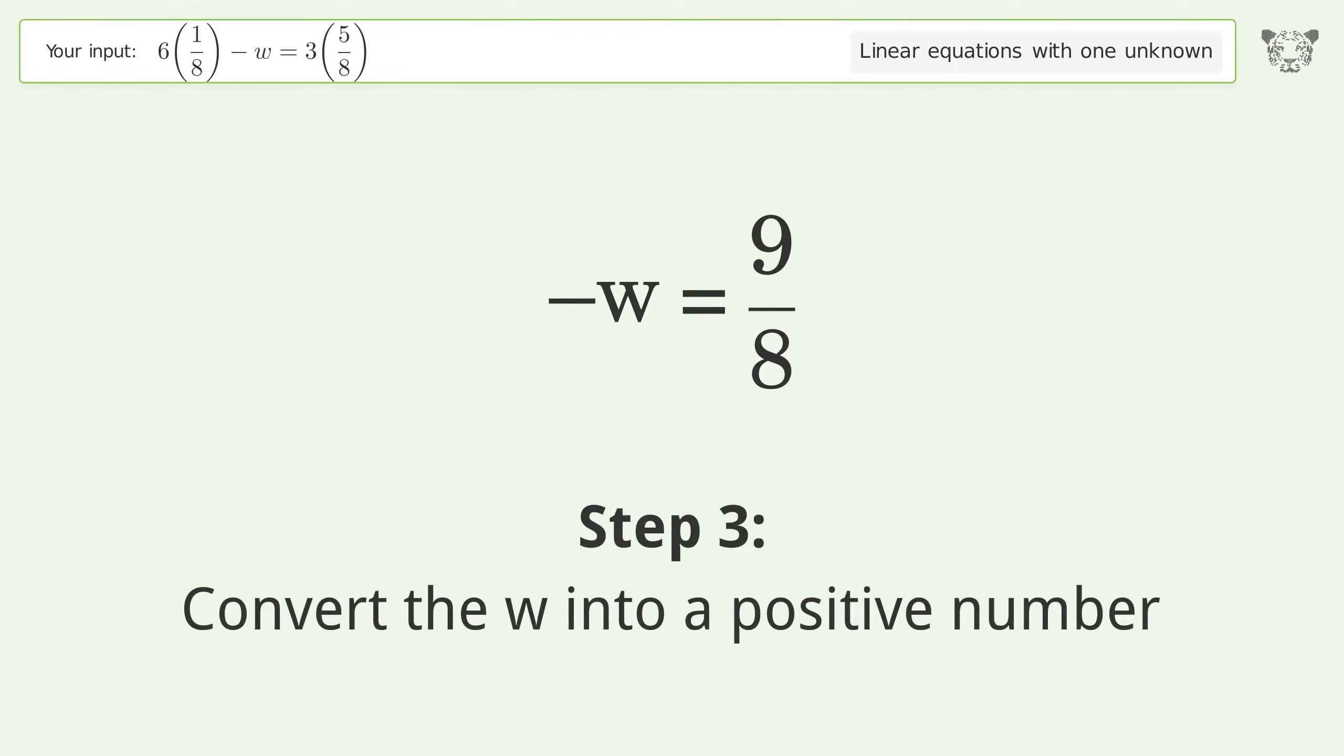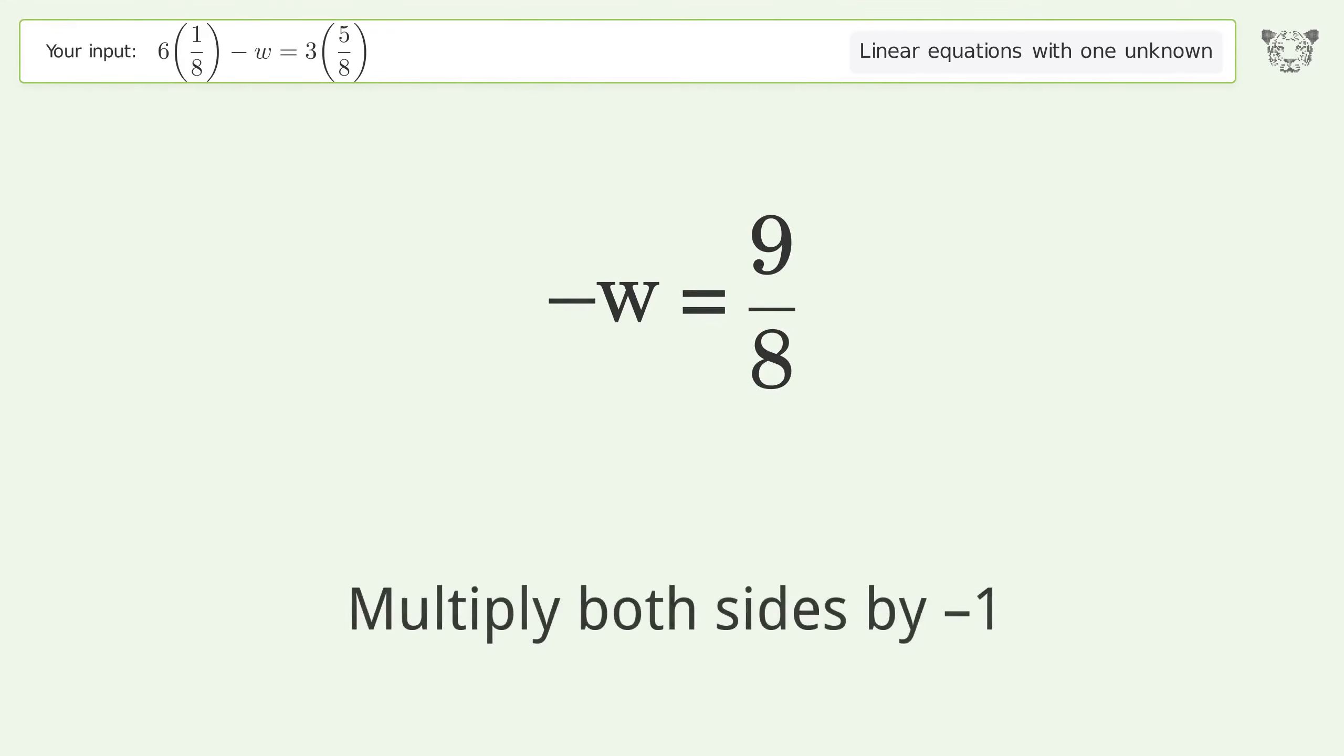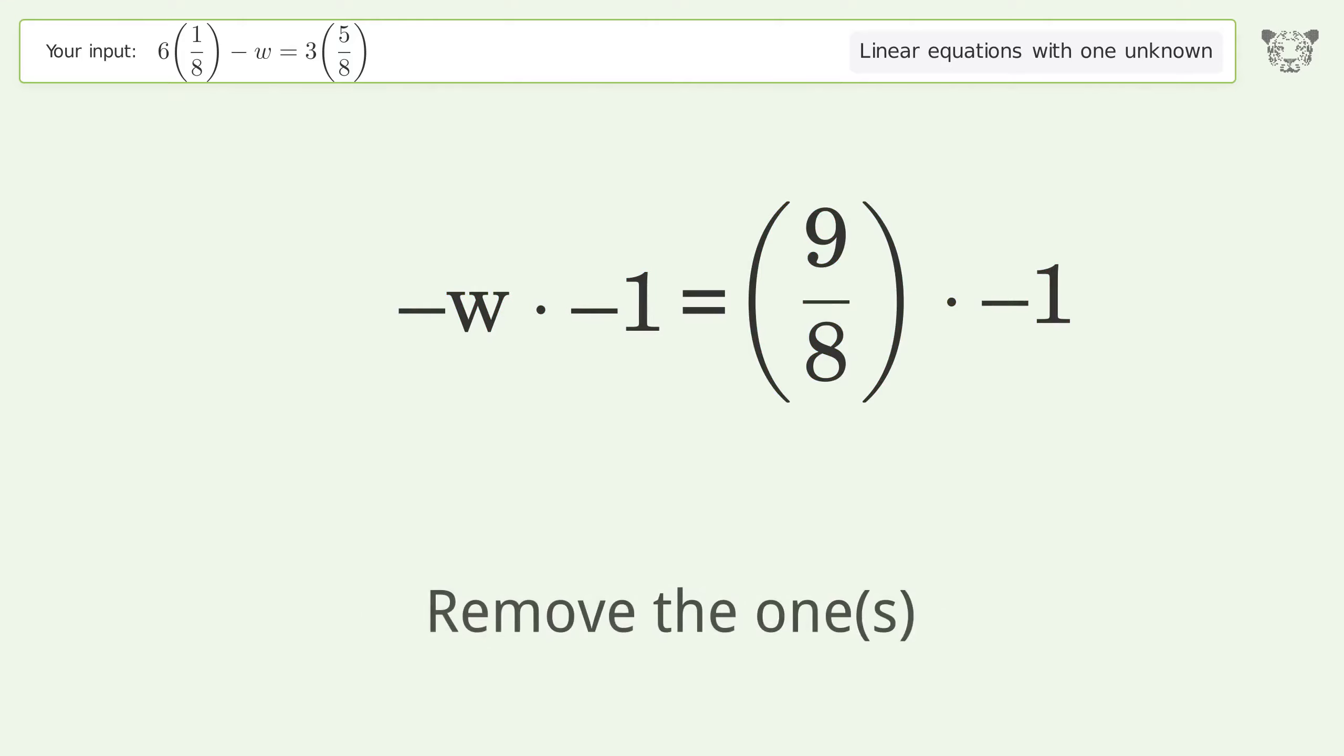Convert the w into a positive number. Multiply both sides by negative 1. Remove the 1s.